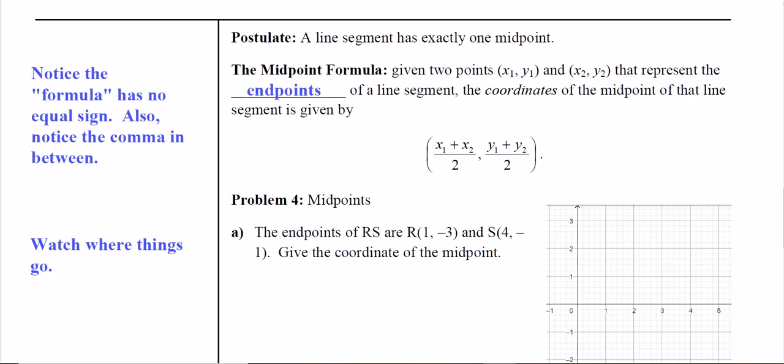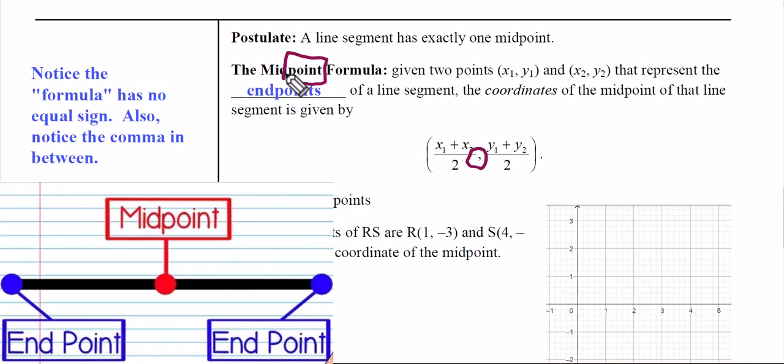Any line segment has exactly one midpoint, and we present to you the formula for the midpoint now. Notice there's a comma between the coordinates because it is a midpoint - you see the word 'point' in the word 'midpoint'.